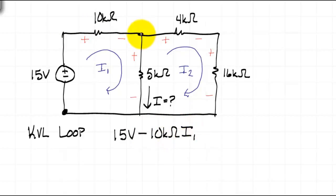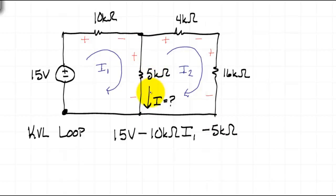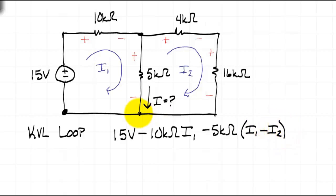Next, we encounter the 5kΩ resistor, where two mesh currents interact. The direction of I1 agrees with the passive sign convention, so I1 is positive. I2 goes in the opposite direction, so that will be a negative current. As we cross the 5kΩ resistor, we go from positive to negative, so the term will be minus 5kΩ times the quantity I1 minus I2. Being back at the node we started at, we have completed the loop, so this must add to zero.